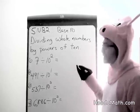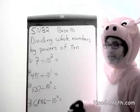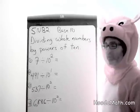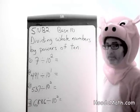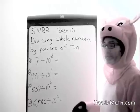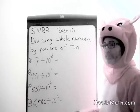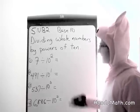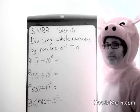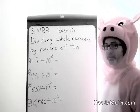When we divide by positive powers of 10, we move the decimal place to the left based on the number that the power is.